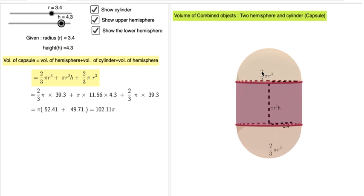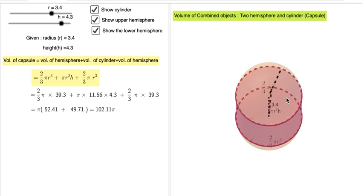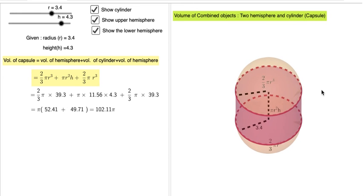You can move around these objects. They're 3D objects. You can look at the 3D view. So play around with these models and understand how to find the volume of a capsule.